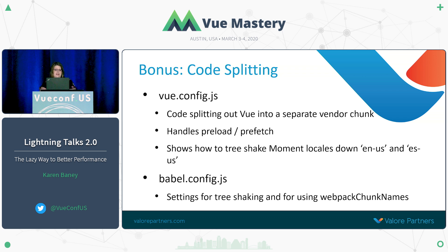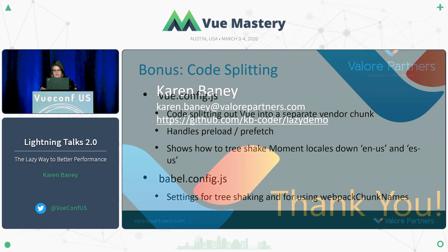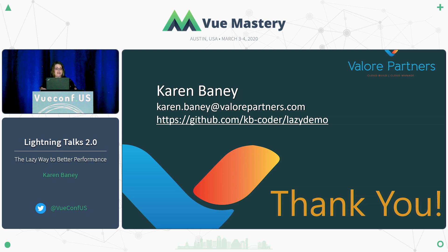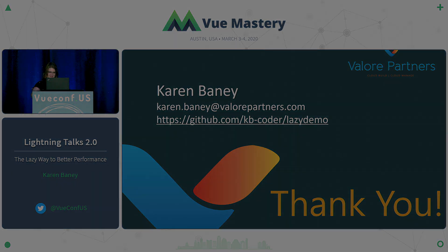There's just one last thing: in the Babel config, you need to turn comments on — it has to be comments true in order for that Webpack chunk name to work. That's it for me. I'm Karen Bainey. You can snap a picture of this to see my GitHub repo for this demo, and I hope you learned a little bit more about optimization. Thank you.